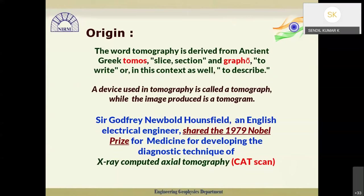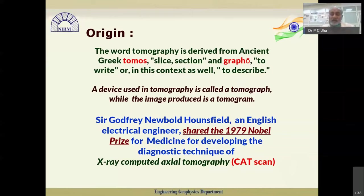The word tomography is derived from the ancient Greek word 'tomos' meaning slice or section, and 'graphos' meaning to write or describe. The device used in tomography is called a tomograph, while the image produced is called a tomogram. This method originated in 1979 when Dr. Godfrey Newbold Hounsfield, an English electrical engineer, shared the Nobel Prize for developing the diagnostic technique of X-ray computed axial tomography — CT scanning.